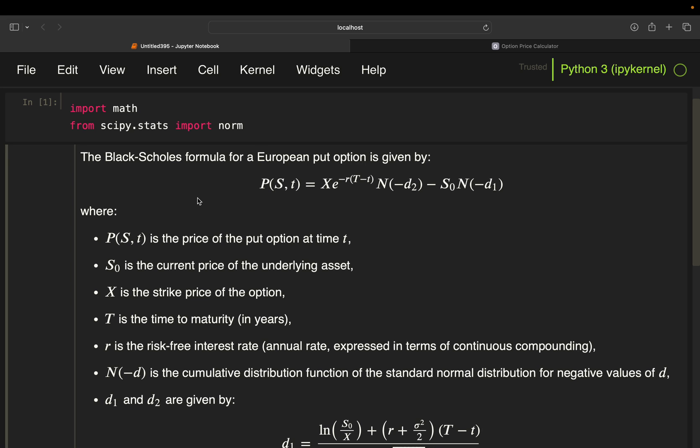I've pulled up the Black Scholes formula for European put here, so let's go quickly over it. We got the strike price discounted for the risk free rate until expiry,